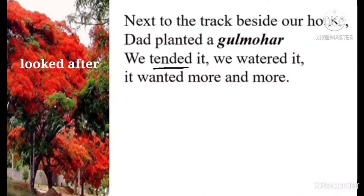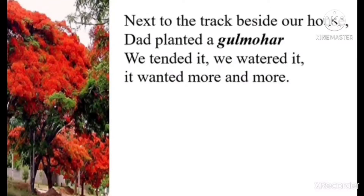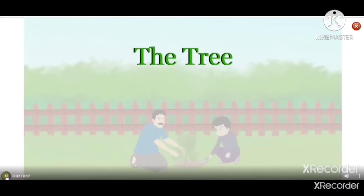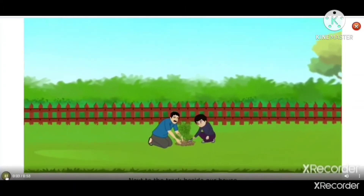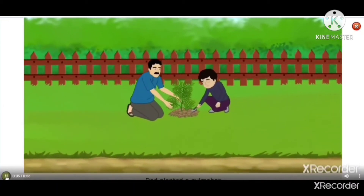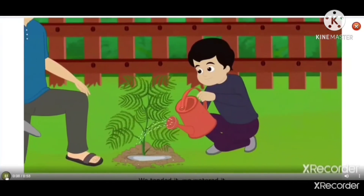Next to the track beside our house, dad planted a gulmohar. We tended it, we watered it, it wanted more and more. The poet is telling us that 'next to the track' means on the way to the house, and 'beside our house' means very next to the house. Dad planted a gulmohar sapling. We tended it means we looked after it. Both dad and the poet took care of it and watered it. Like a small baby, the small plant needed a lot of care and more and more water as it was growing.